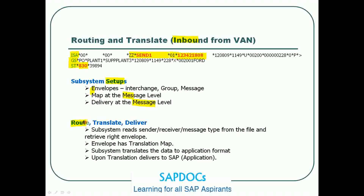On the routing and translation function, the subsystem reads the sender, receiver, and message type from the file and retrieves the right envelope. Once it reads these three segments, it finds the envelope, then finds the map and the delivery. Once the map is found, the subsystem translates the data to application format — which in this case is the IDOC format. Upon translation, it delivers to SAP.